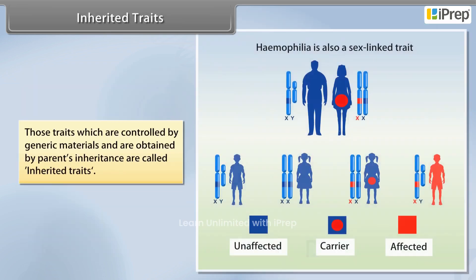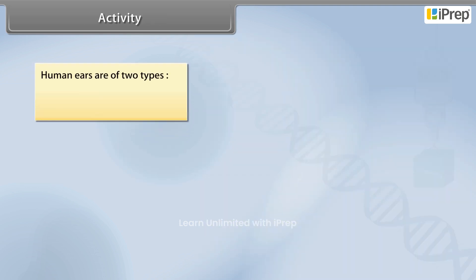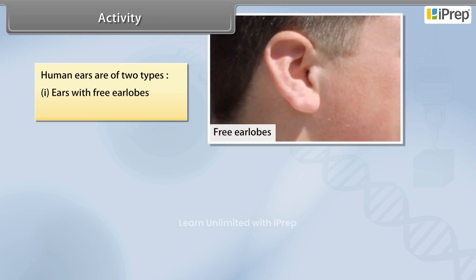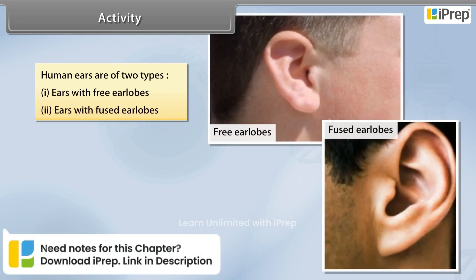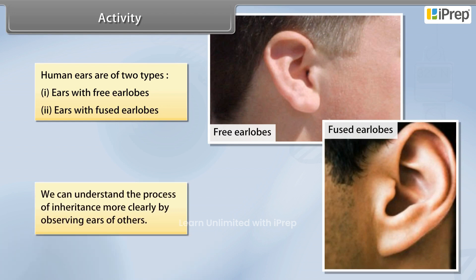Those traits which are controlled by genetic materials and are obtained by parental inheritance are called inherited traits. Human ears are of two types: ears with free ear lobes and ears with fused ear lobes.